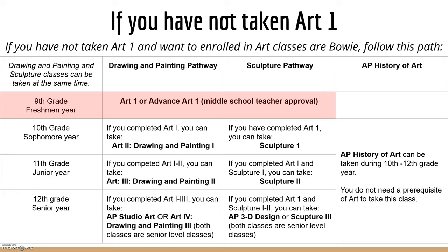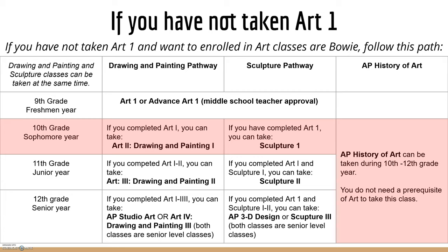Freshman year you have two options of classes: Art 1 or Advanced Art 1. Advanced Art 1 requires teacher approval and you must have completed two years of middle school art. After you've completed Art 1, your sophomore year is when you can start stepping into those upper level classes. You can enroll in Art 2, Drawing and Painting 1, or Sculpture 1, and you also have the option of AP History of Art. This class is offered from sophomores to seniors and covers the history of art from cave paintings all the way to modern art.